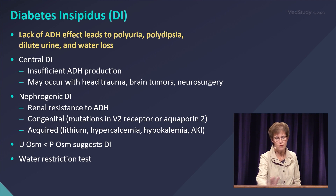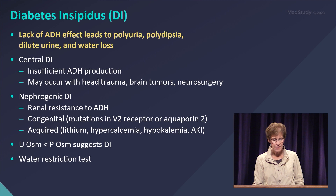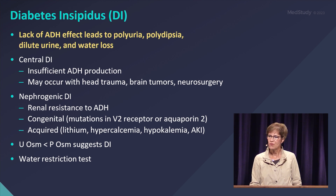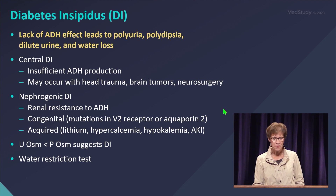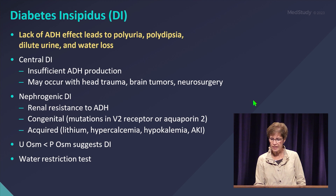You can't tell which form it is from osmolarity alone, but you would suspect DI. Our test to figure out DI is a rough test called a water restriction test. You hospitalize the patient, have them not have any water, and see what happens to their labs, urine output, and weight. It's a rough test, but it distinguishes central versus nephrogenic.